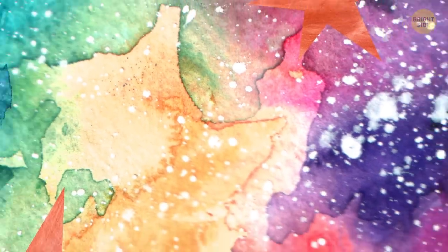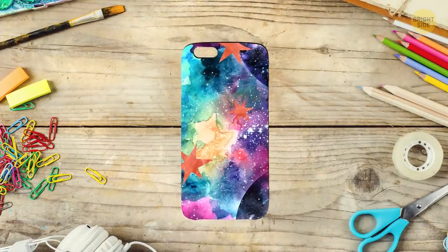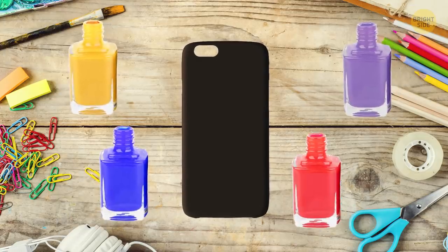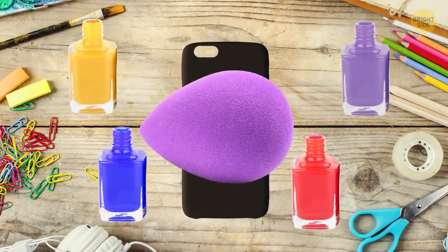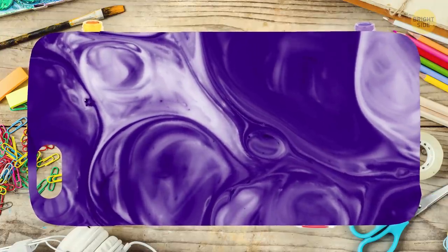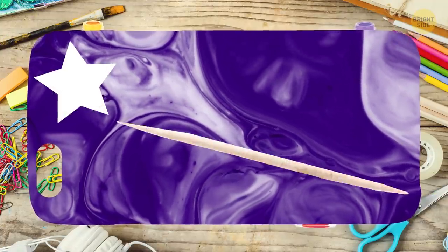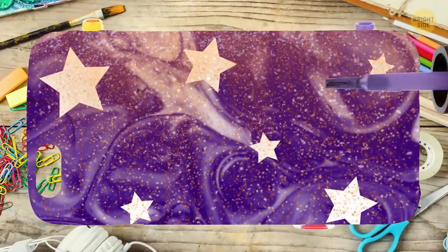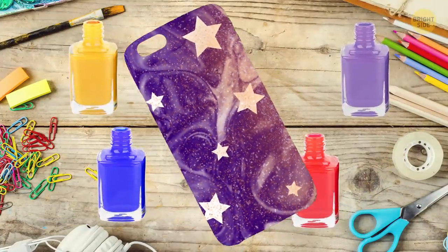Create a galaxy on the back of your phone. A dark-colored case will look more epic. Pick three or more nail polish shades. Cut a makeup sponge into several pieces and randomly dab different colors on the phone case. Paint some stars with the help of white polish and a toothpick and add glitter. Cover it all with two layers of transparent polish and let it dry well.